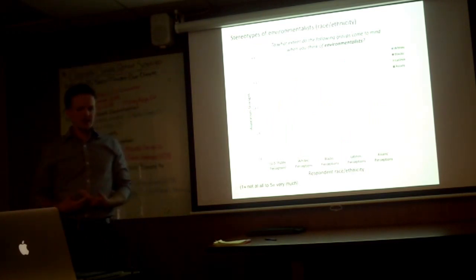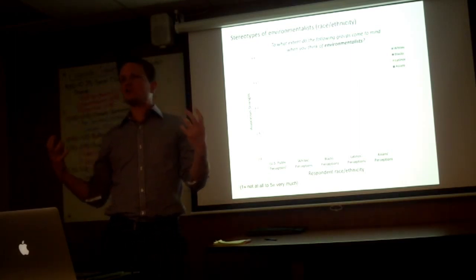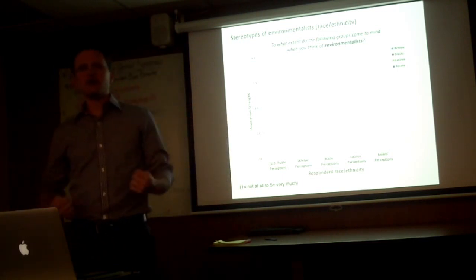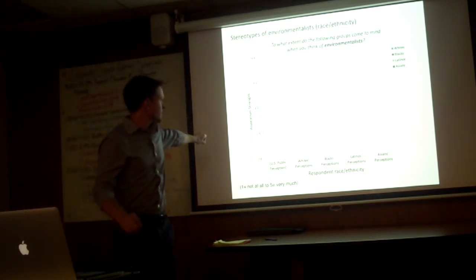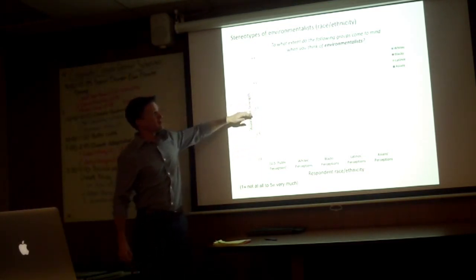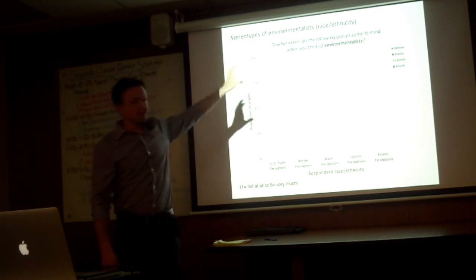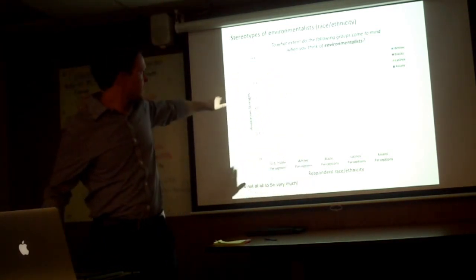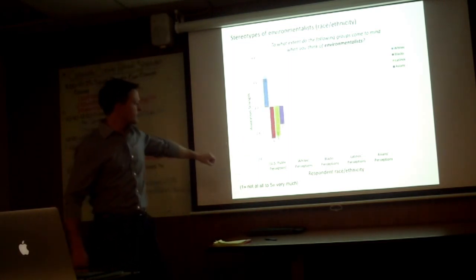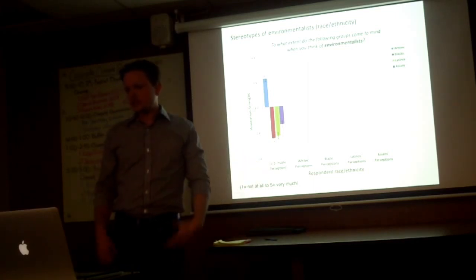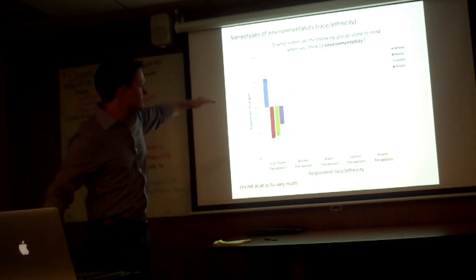So where might these perceptions be coming from? Well, one place we thought we would look would be who's coming to mind when people think about the groups that are tackling environmental issues, environmental problems? And so this is showing on the scale the strength of association that participants made between the racial and ethnic categories on the right and the term environmentalists. Three's the midpoint of scale just to give you a reference. So people generally associate, this is the average aggregate across the US public, generally associated whites with environmentalists and not non-whites. So these are dissociated relative to the midpoint of the scale.